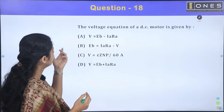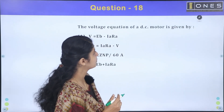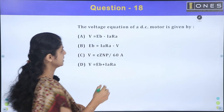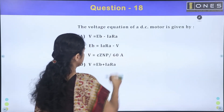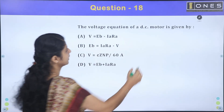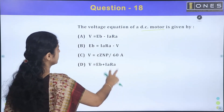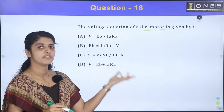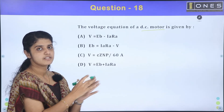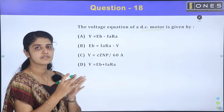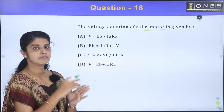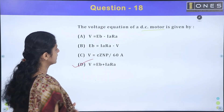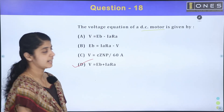Question 18: The voltage equation of a DC motor is given by. Simple question — what is the voltage equation of a DC motor? The motor is given by the supply, the voltage drop, and then back EMF. The answer is V is equal to Eb plus Ia·Ra.